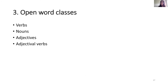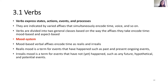I'm now going to discuss the open word classes of Subanon. Just like other languages in the world, Subanon has verbs, nouns, adjectives, and adjectival verbs. Verbs express states, actions, events, and processes. They are indicated by varied affixes that simultaneously encode time, voice, and so on. Verbs are divided into two general classes based on how the affixes they take encode time: mood-based and aspect-based.